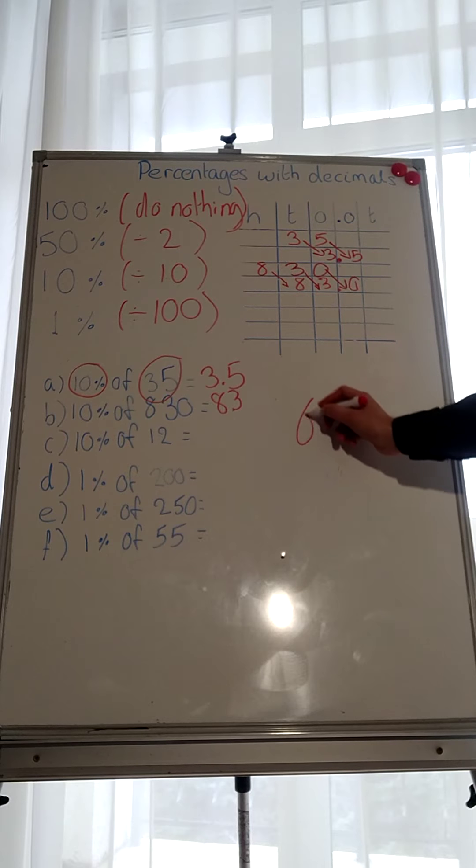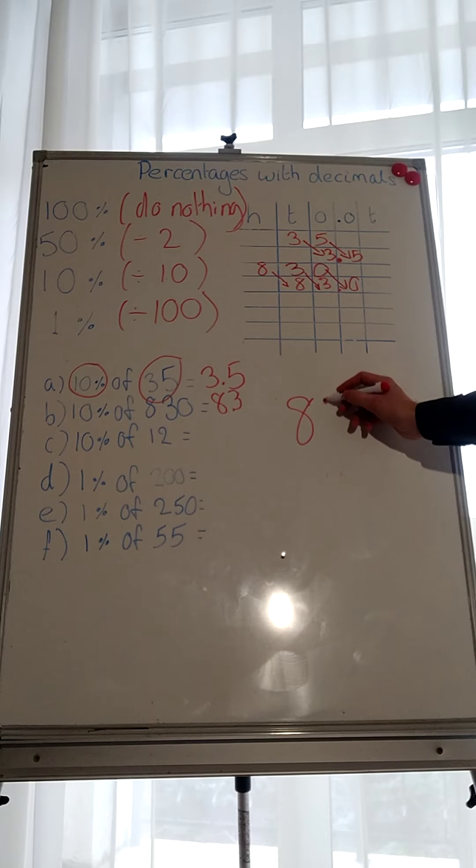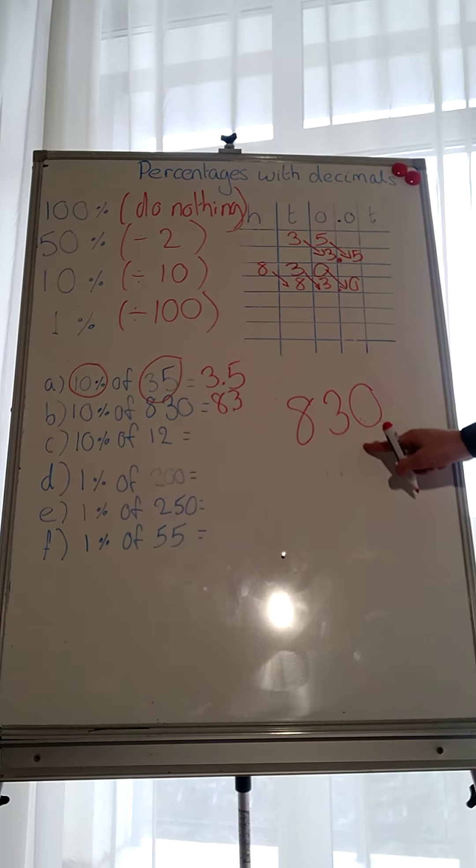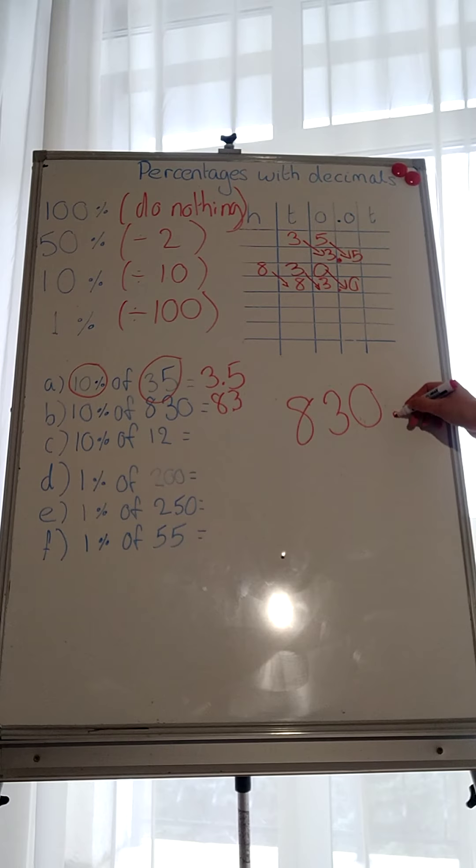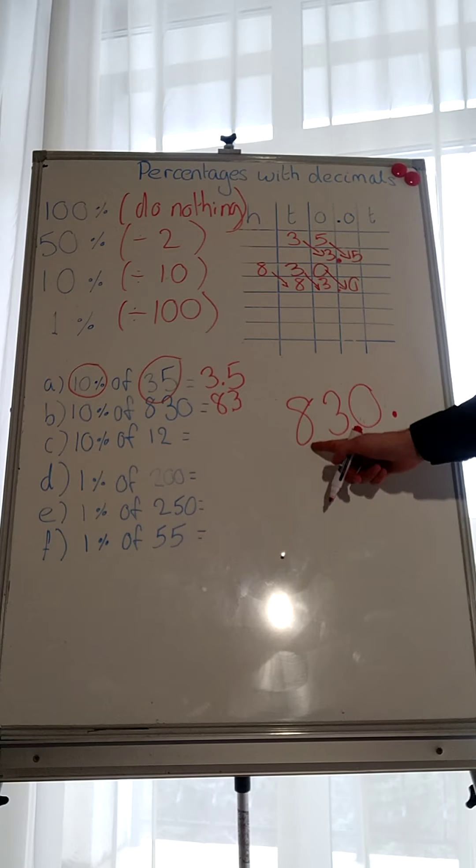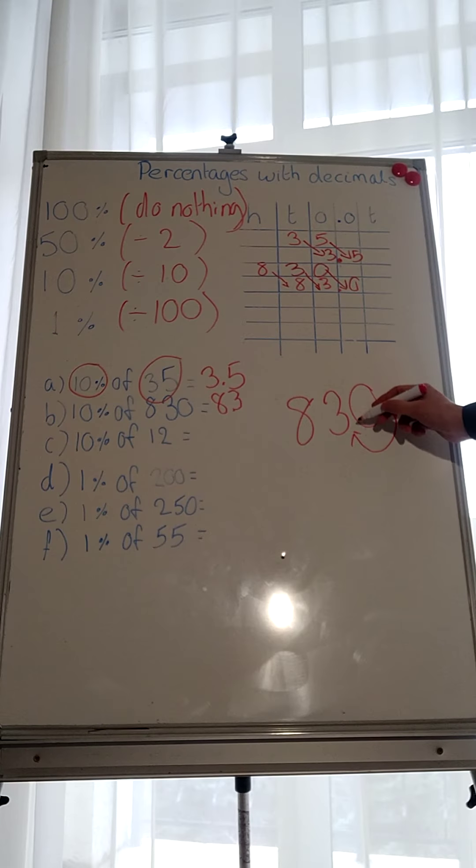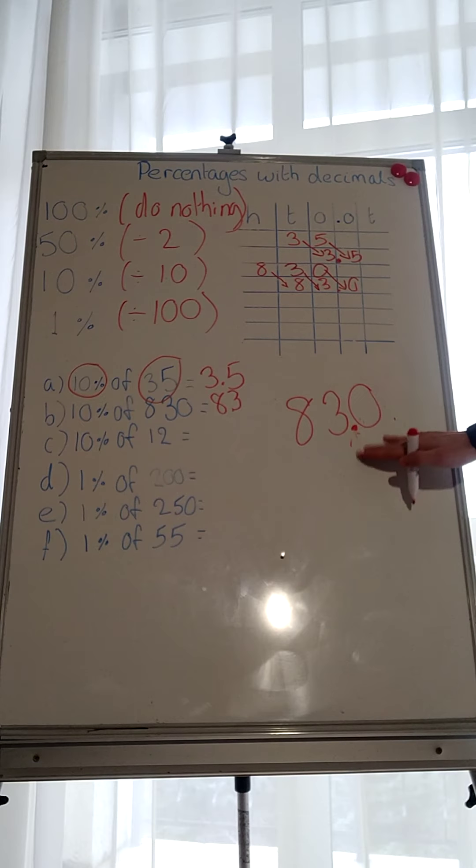Let's do it here as well, so you can see the other method. 830. Where do we put the decimal point when it's a whole number? At the end. Dividing by 10. So where do we move the decimal point to? So it becomes 83. Simples.